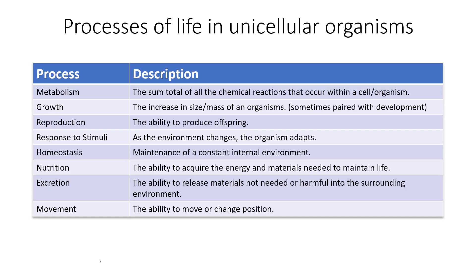Hey guys, Mr. P here. In this video we're going to start with a discussion of the processes of life in unicellular and multicellular organisms. According to our current understanding of biology, all living things possess these traits: metabolism, growth, reproduction, response to stimuli, homeostasis, nutrition, excretion, and movement. Metabolism by definition is the sum totality of all chemical reactions that occur within a cell or organism, which includes catabolism and anabolism.